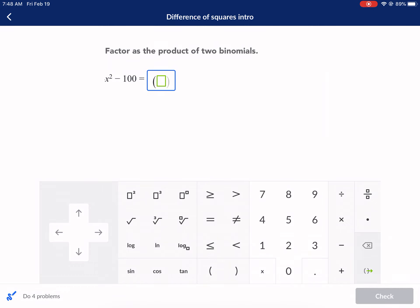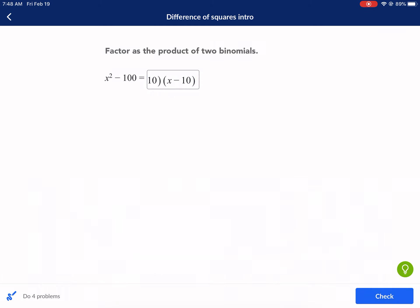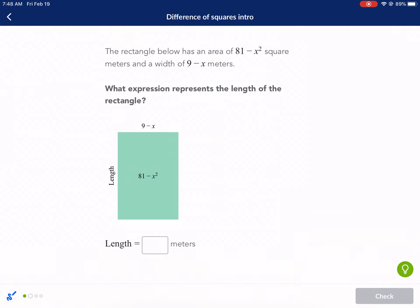So we have parentheses X times X plus 10 and X minus 10 in parentheses. Now, it doesn't matter which one's first. You can have X minus 10 and then X plus 10. That part is not important because it's a product community property.